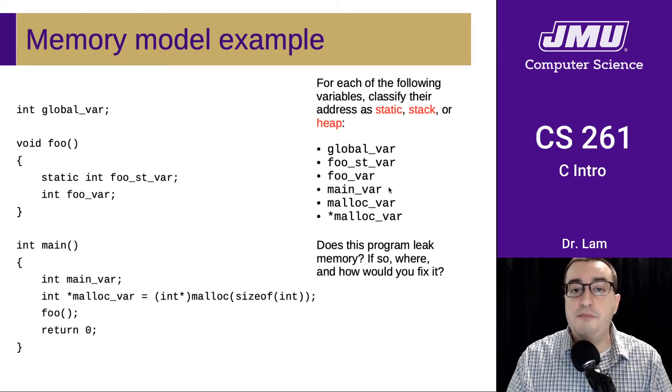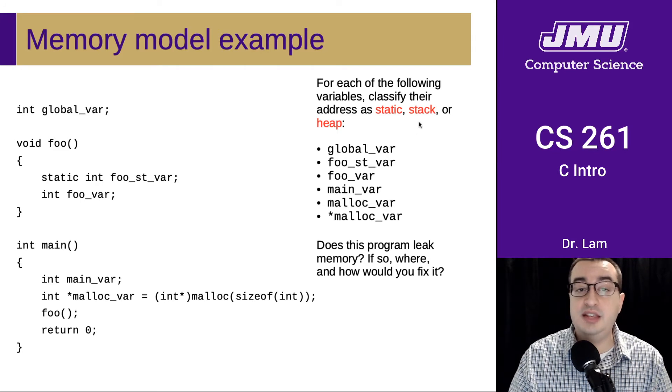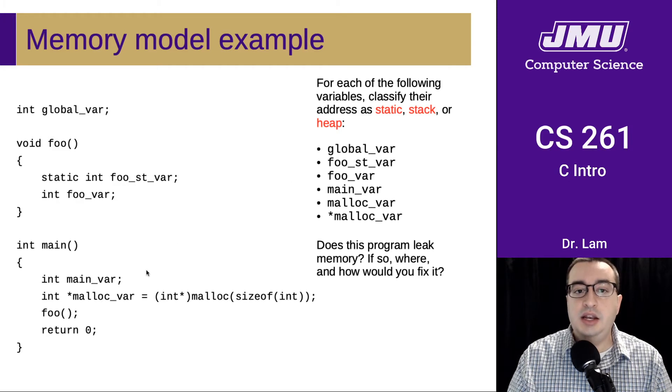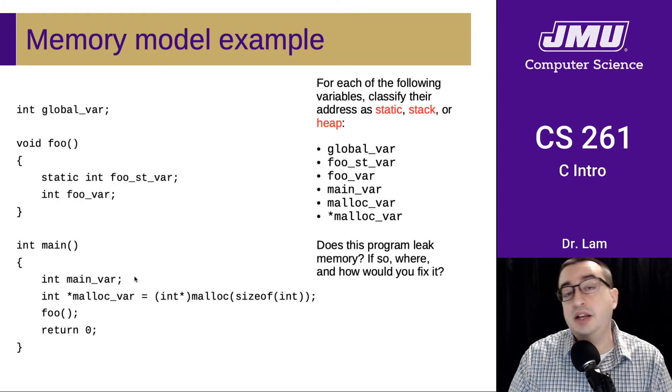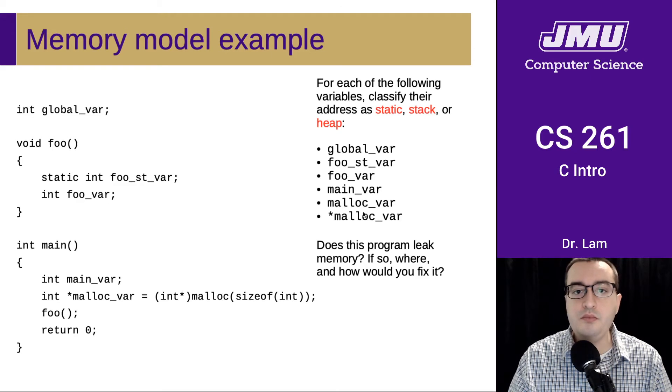Now we have main_var, which is declared inside of main. So just like foo_var, it is going to be a local variable. It is going to be located on the stack, because that's where local variables generally are located. And it is going to have a dynamic lifetime, just like foo_var. It's going to be allocated whenever you call main and deallocated whenever main returns.